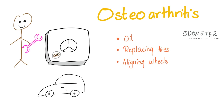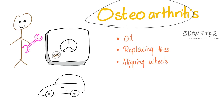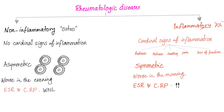If you understand something about cars, your information will be invaluable for osteoarthritis — if you know what engine oil is, how to replace tires, how to align the wheels, and you know the odometer that counts your kilometers or miles. Osteoarthritis is a piece of cake because, in large, it's a mechanical wear and tear.